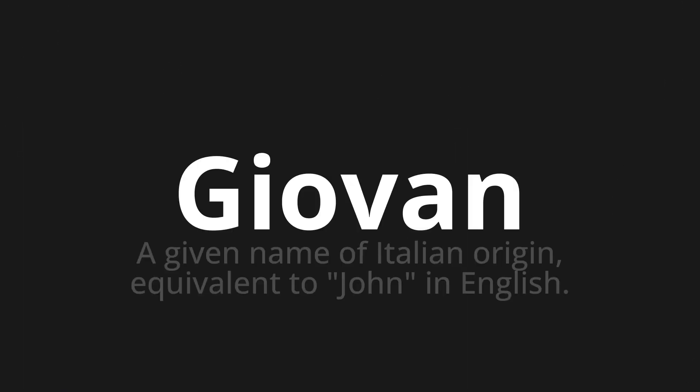Welcome to this pronunciation video. Today, we will be focusing on a new word that you might find challenging or intriguing. So, let's dive into today's word: Giovanni, which means a given name of Italian origin, equivalent to John in English.